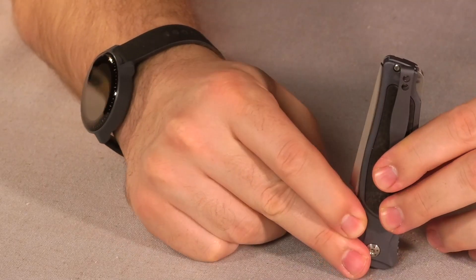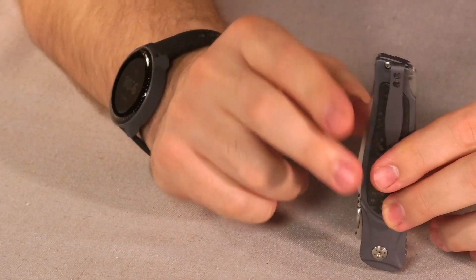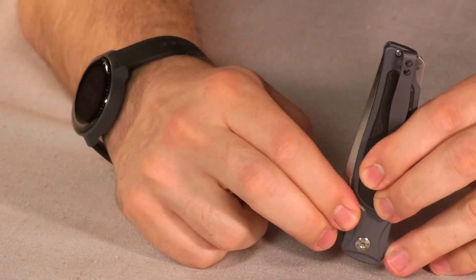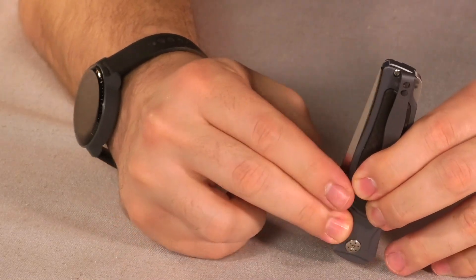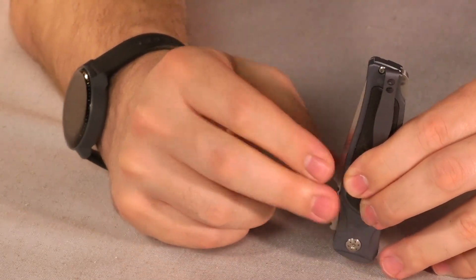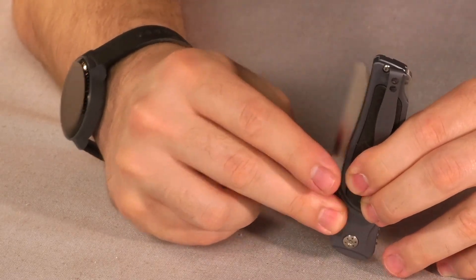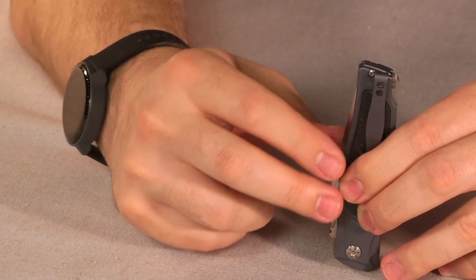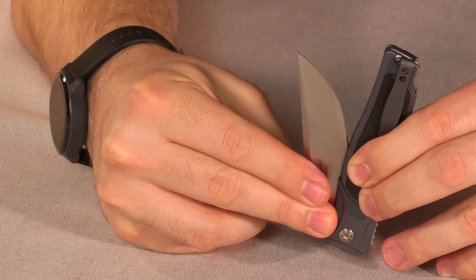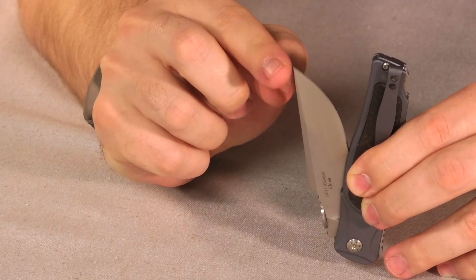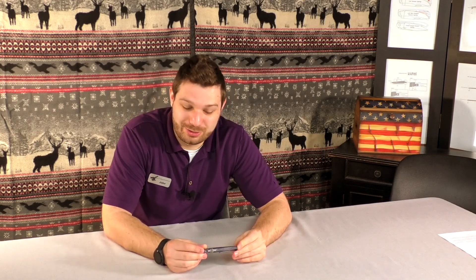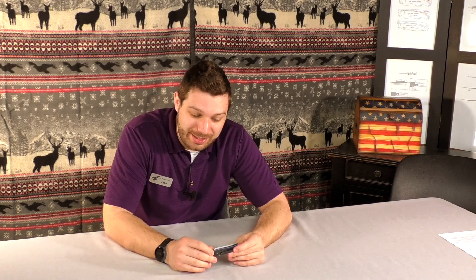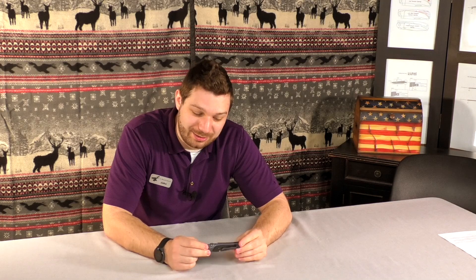It is tip up carry only but with the lock back spring on it, it has a bias to closure so it's never going to be just partially open in your pocket because it always wants to close all the way up to like 30 percent, right there, and then you go a little bit further it drops shut. So it's got that bias to closure so I know a lot of guys don't carry tip up unless it's got bias to closure.